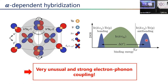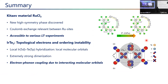That was everything. To summarize: combining high-pressure X-ray diffraction with quantum chemistry and DFT reveals new physics in correlated electron systems — the importance of Coulomb exchange in Kitaev materials, and unusual bond-angle-driven electron-phonon coupling in IrTe₂. Thank you very much for your attention.